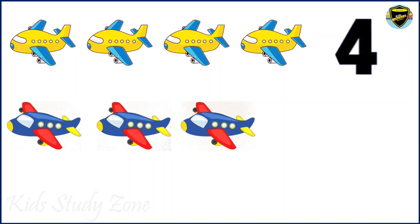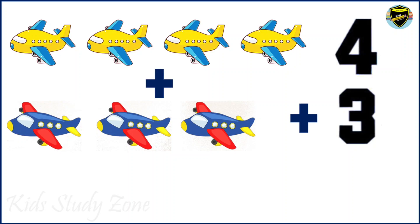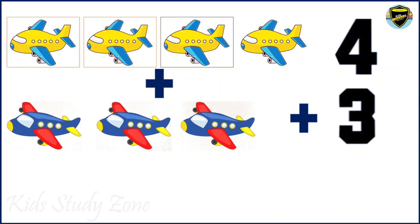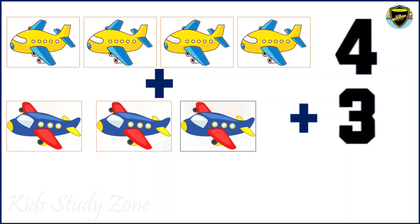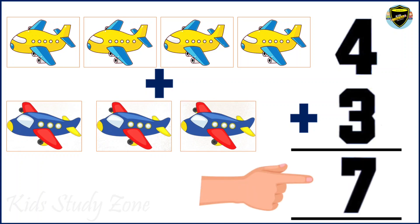We will write 3. Sign of addition is plus. Now we need to add these aeroplanes once again. Let's start counting: 1, 2, 3, 4, 5, 6, 7. So total we have 7 aeroplanes.